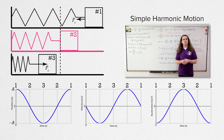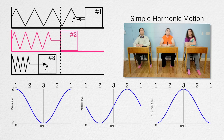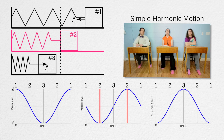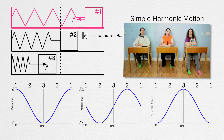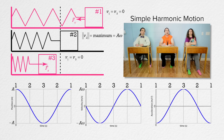Bobby, at position two, what do we know about the velocity of the block? According to the velocity graph, at position two the block will have its maximum magnitude of velocity, with a value of the amplitude times the angular frequency. Billy, what about the velocity of the block at position one? The velocities at positions one and three will both be zero. You can see this from the graph because the curve passes through the time axis there. We also know this because the block is changing directions at positions one and three, and when velocity changes direction its value passes through zero.